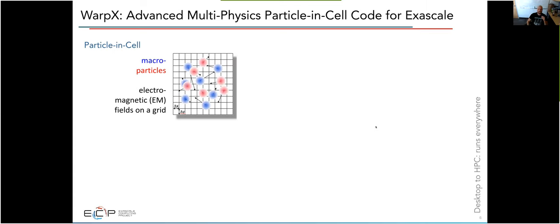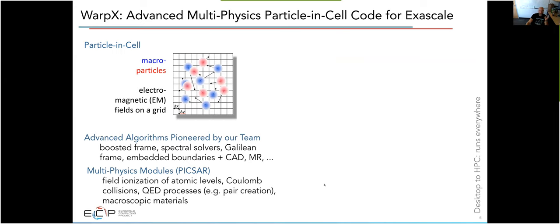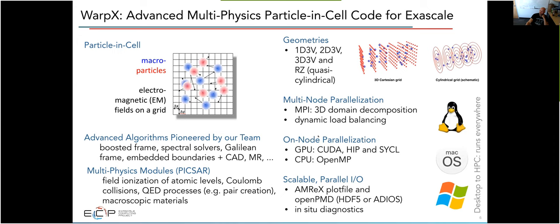So just kind of an overview of the WarpX code then. So we're a PIC code, so we have macroparticles that represent collections of electrons or positrons or other charged particle species. And then there's also a mesh on which we store the electromagnetic fields and the current density and charge density. So WarpX, on top of the basic PIC algorithms, it implements a number of advanced features. So there's the ability to operate in the Lorentz boosted reference frame. There are high order spectral solvers, support for embedded geometries, support for mesh refinement, etc. There's also a number of multi-physics modules that come in via the PICSAR library. So this models things like field ionization, Coulomb collisions, and QED processes like pair creation, for example. We support 1D, 2D, and 3D Cartesian geometry, and also have support for RZ quasi-cylindrical mode.